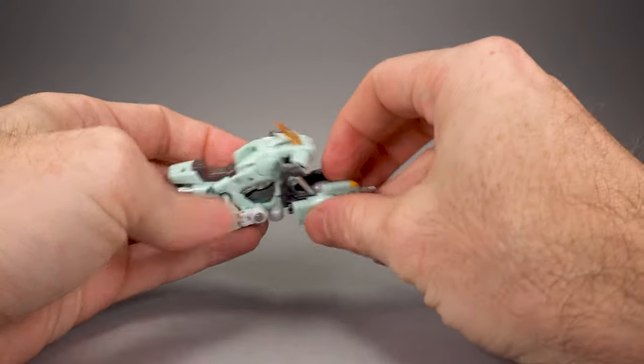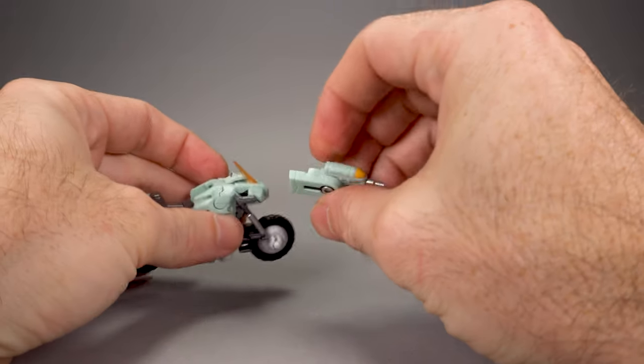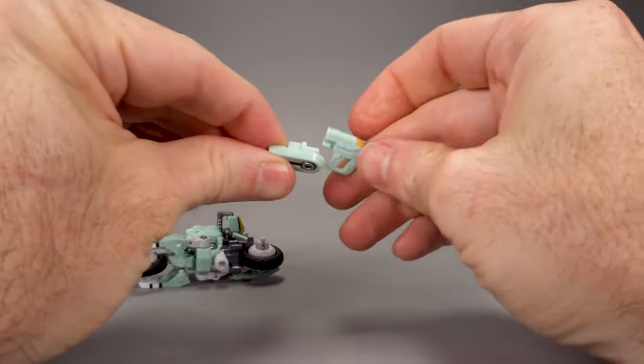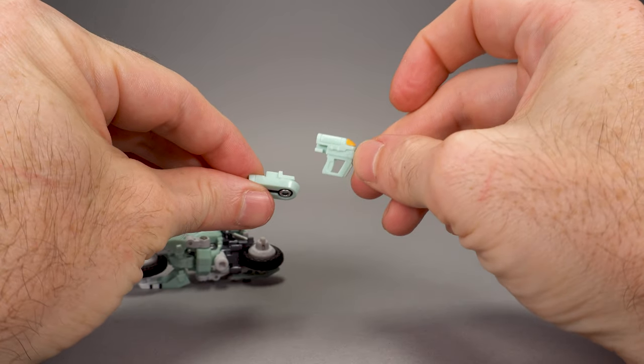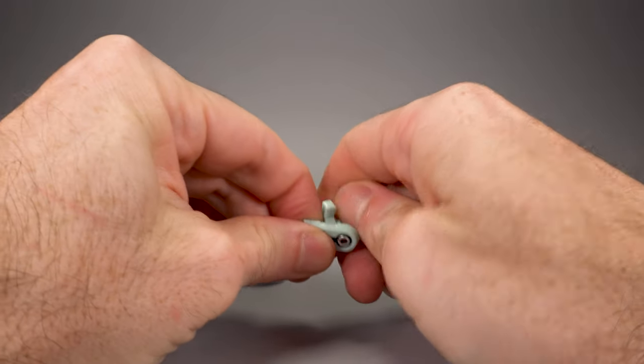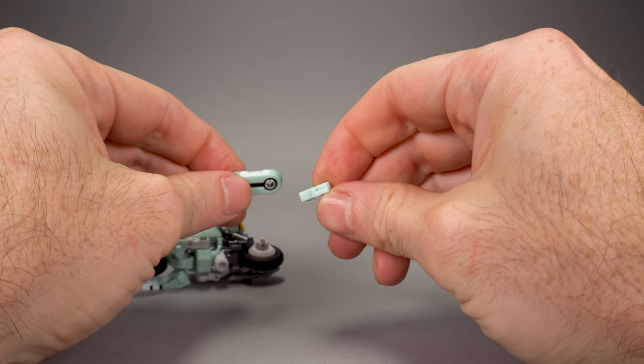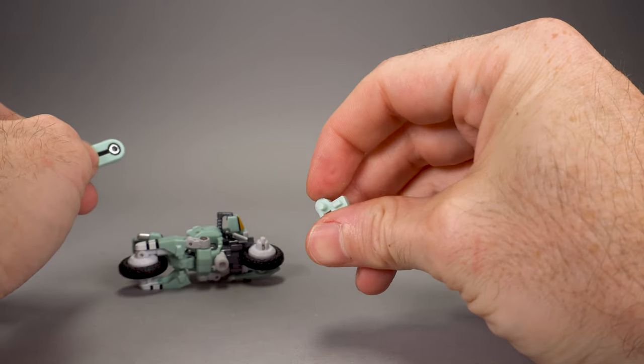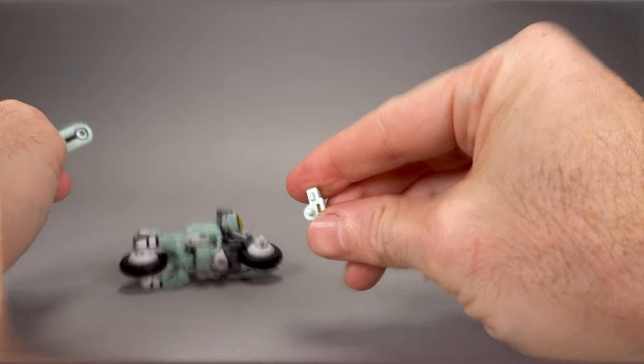If you're transforming Ray or Rand's version of the toy, when you pop off this bracer here, you are then going to disassemble it. So we're going to take the gun off. That's going to end up in the character figure's hand later. And then there's this little piece right behind it that attaches the gun in bike mode. You're going to put this back in your parts tray. You're not going to need it anymore.